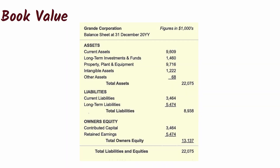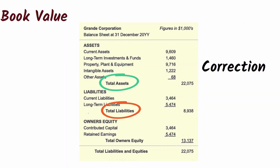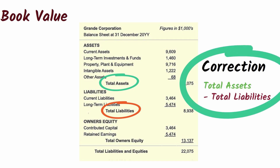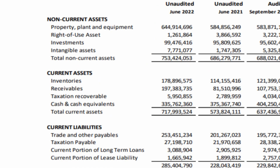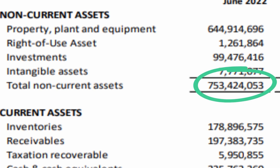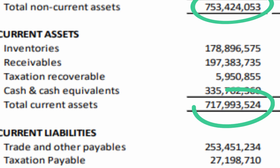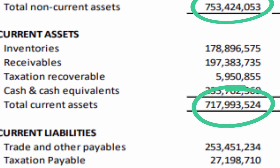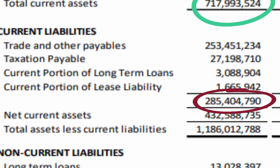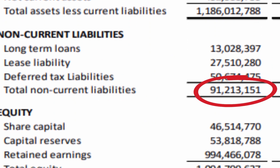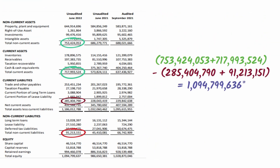Book value is found by taking total assets minus total liabilities from the balance sheet. For Honey Bun's most recent quarter: non-current assets were $753,424,053, plus current assets of $717,993,524. Minus current liabilities of $285,404,794 and non-current liabilities of $91,213,151, giving a book value of $1,094,799,633.